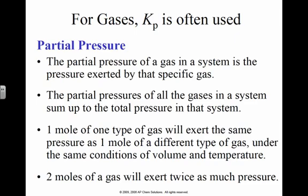Partial pressure of a gas in a system is the pressure exerted by the specific gas. The partial pressures of all the gases in the system will add up to the total pressure. One mole of the type of gas will exert the same pressure as one mole of a different type of gas if they're both under the same conditions, temperature and pressure. Two moles of gas will exert twice the amount of pressure.